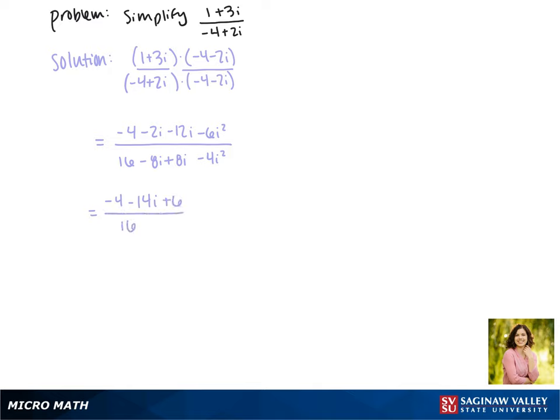Here we have 16, and same thing in the denominator, i squared is negative 1, times a negative 4 is plus 4.